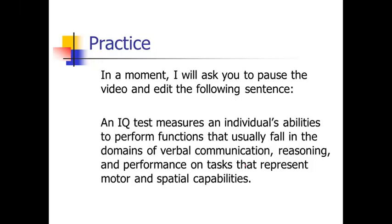So here's what I did on this sentence. 'An IQ test measures an individual's abilities to perform functions that usually fall in the domains' — this is very wordy. How about we just get to what the test measures? An IQ test measures an individual's verbal abilities — we could just say that. I don't think we need 'communication' after 'verbal' because that's repetitive. Verbal, reasoning — and then 'performance on tasks that represent' — how about we say more directly that it's measuring their motor and spatial capabilities. Perhaps there are more than one type of IQ test, so we might use 'or': an IQ test measures an individual's verbal, reasoning, or motor and spatial capabilities.